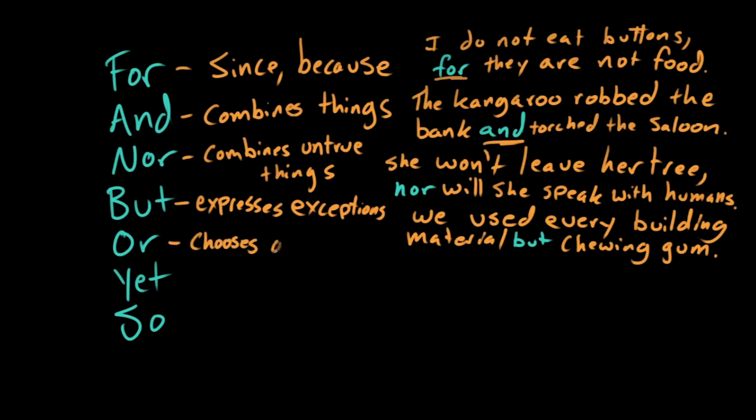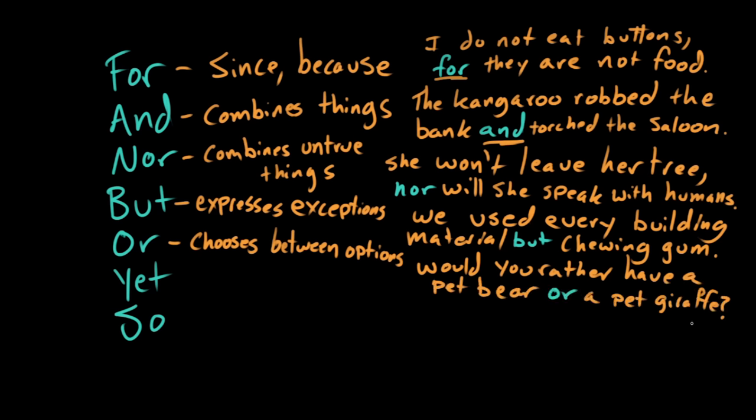We use or as a conjunction to choose between options. As in, would you rather have a pet bear or a pet giraffe? We ask the hard questions in Khan Academy.